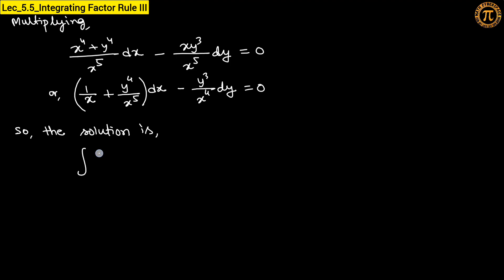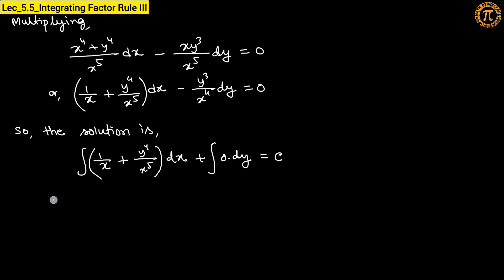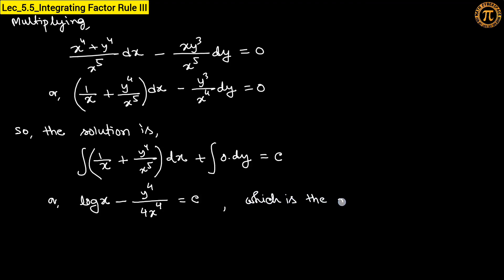Applying the exact equation solution formula: integrate M with respect to x — integrating 1/x gives log x, and integrating y⁴/x⁵ (treating y as constant) gives y⁴ times x⁻⁴/(−4) = −y⁴/(4x⁴). The term −y³/x⁴ in N is not free from x, so the N integral contributes 0. The required solution is log x − y⁴/(4x⁴) equals c.